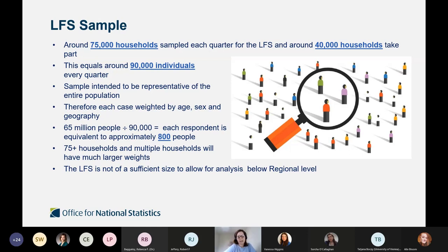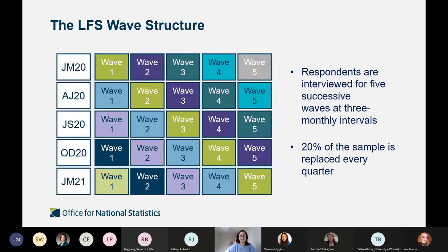That figure differs based on characteristics — certain sample members, like people living in 75-plus households, have larger weights because we don't interview them at every wave. An important thing to mention is that the LFS is not of sufficient size to allow analysis below regional level — this is where the annual population survey comes in. The LFS is a longitudinal survey where we follow addresses over five waves in three-monthly intervals, replenishing 20% of the sample every quarter.